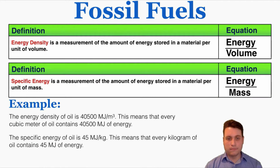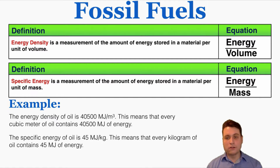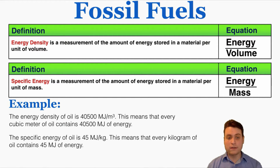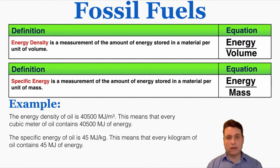This leads to two important definitions. The energy density of a substance is the amount of energy stored per unit of volume — energy over volume. The specific energy is the amount of energy stored per unit of mass — energy divided by mass. Both are extremely important for fossil fuels because fossil fuels have incredibly high energy density and specific energy. For example, the energy density of oil is 40,500 megajoules per meter cubed, meaning every cubic meter of oil contains 40,500 megajoules of energy stored in a relatively small space.